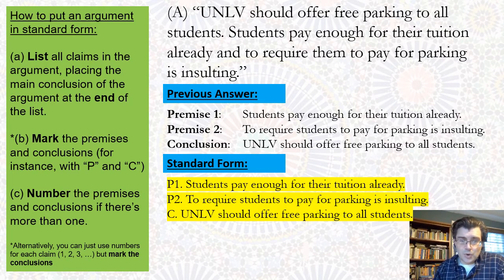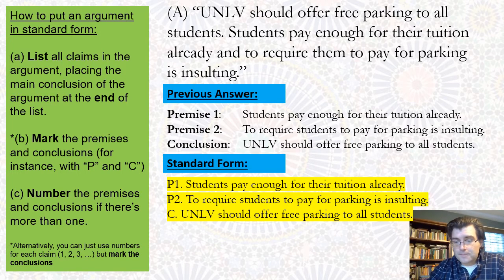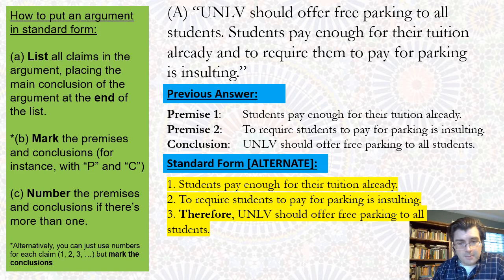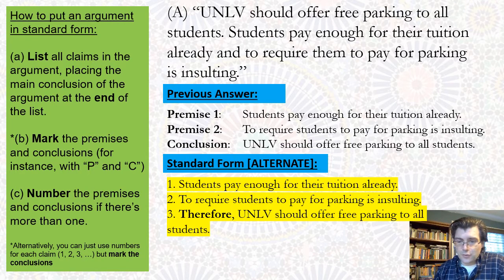You'll see here with this example the standard form summary is very similar to the expression of the argument you've seen in a previous video. Here I've given the simple labeling: P1 for premise one, P2 for premise two, and C for conclusion. Alternatively, you can just number each of the claims one, two, three, etc., but you still need to indicate which claims are conclusions — an easy way to do that is to add the word 'therefore' to the conclusions.